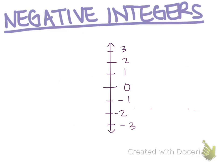And when your number line is vertical or up and down, the negative integers are below the zero on the number line.